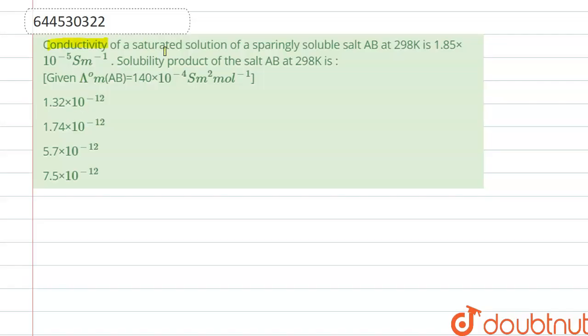Hello everyone, here the question is: conductivity of a saturated solution of a sparingly soluble salt AB at 298 Kelvin is 1.85 × 10^-5 S/m. Solubility product of the salt AB at 298 Kelvin is, whereas the equivalent conductivity...